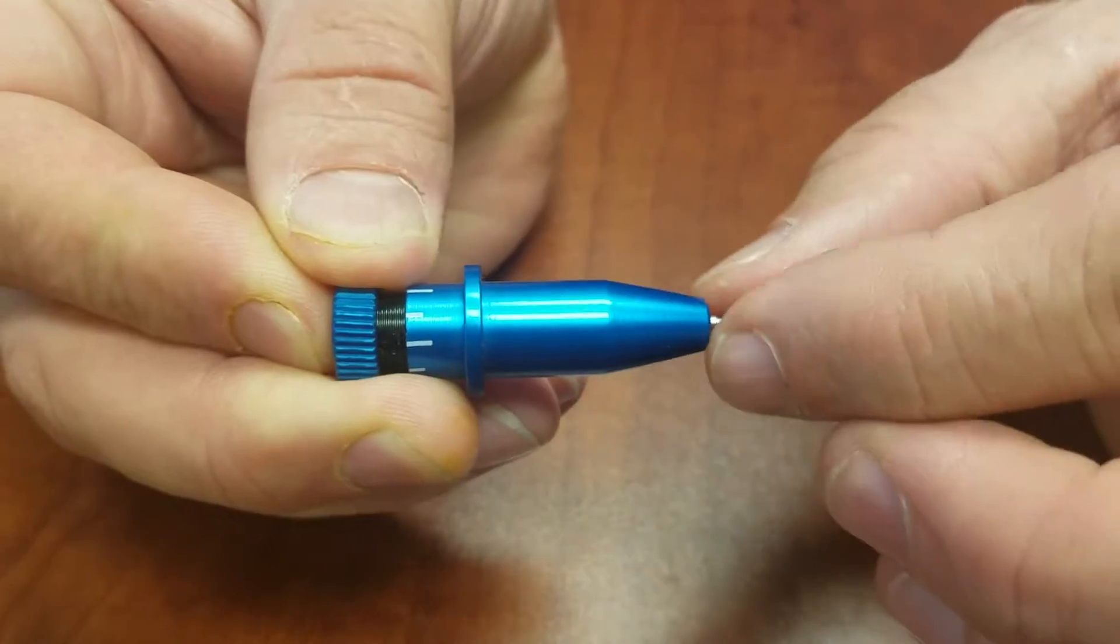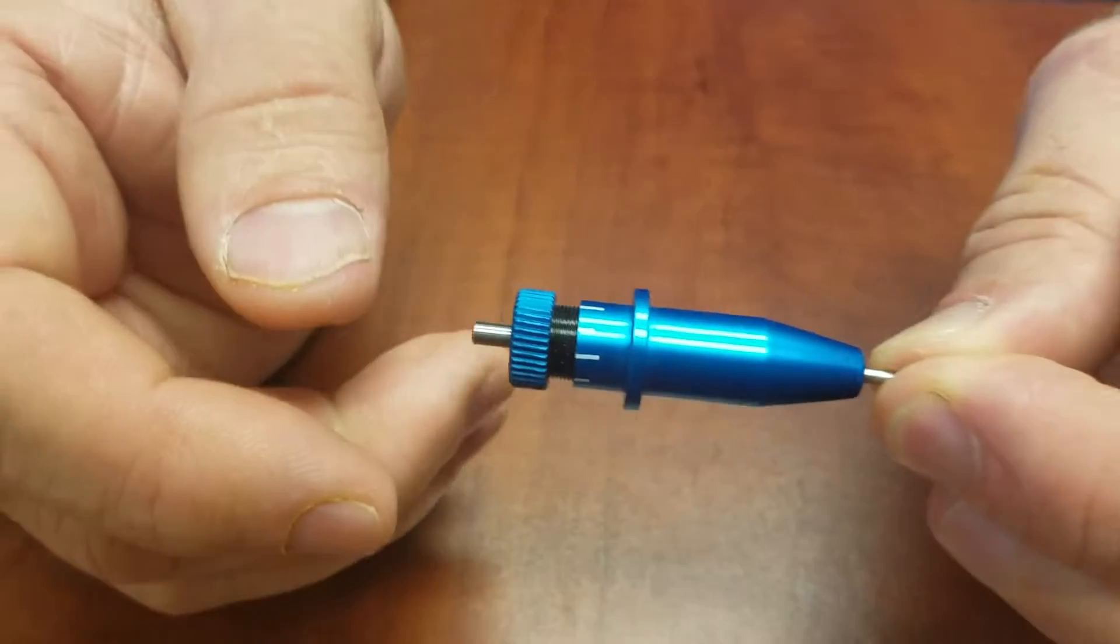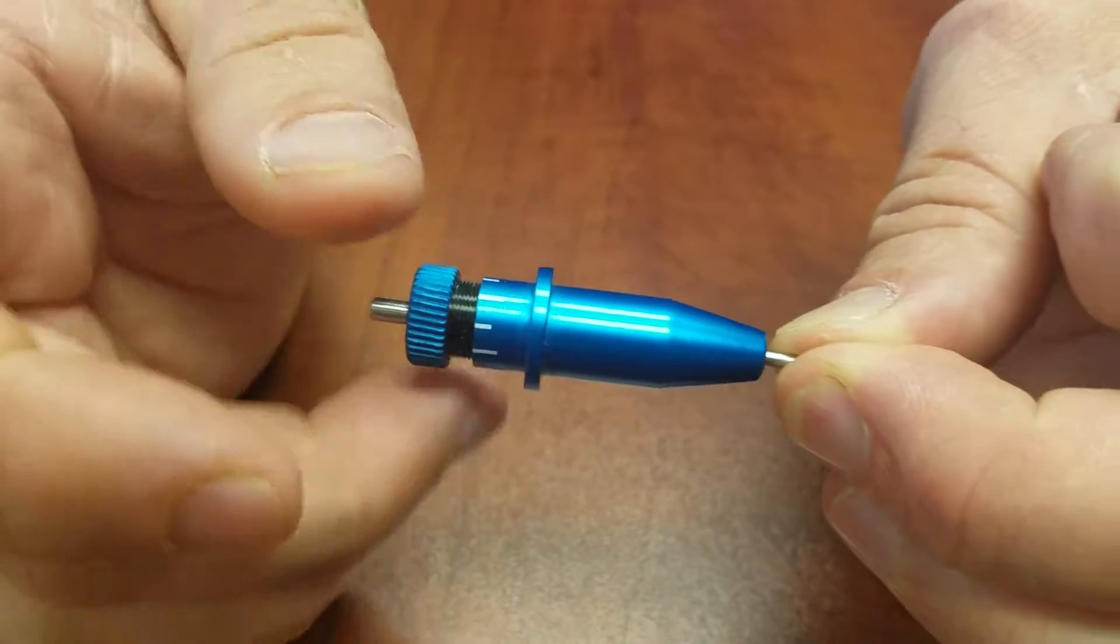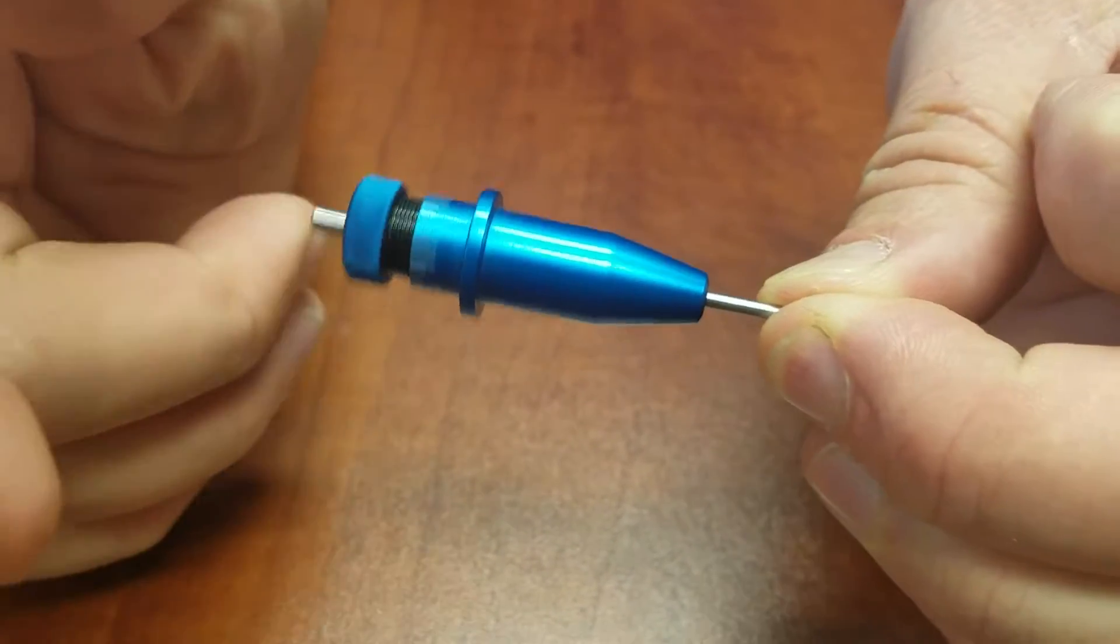So we want to eject the blade slightly out to where you can grab it with your fingertips and then flick it like a top. It should continue to spin.